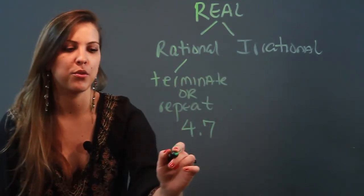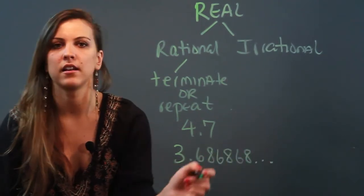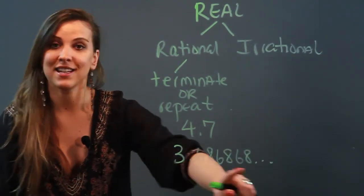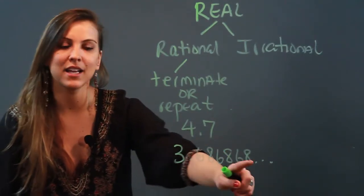Another example would be 3.686868 dot dot dot. Why is that rational? Because it doesn't terminate—it goes on forever as indicated by the three dots—but it does repeat.